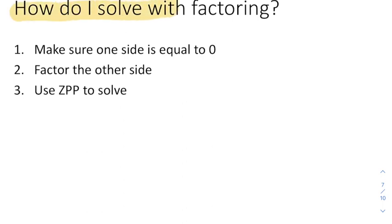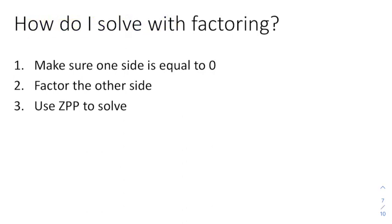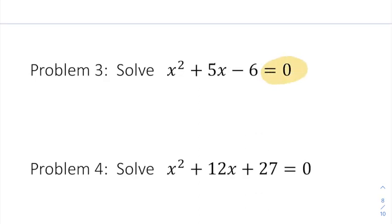Now we're going to keep factoring here, but now we're going to learn how to solve with factoring. And really, all we need to do is we need to make sure one side is equal to 0, factor the other side, and then use the ZPP, just like we did in the last lesson. Now we're going to be nice to you and start these problems off equal to 0.